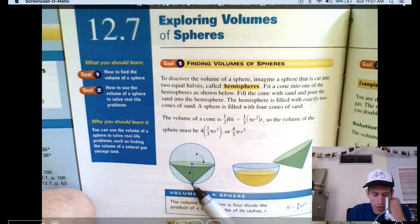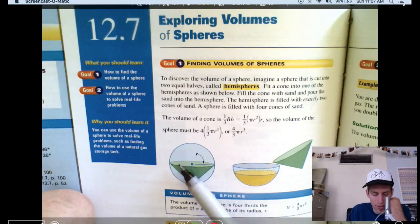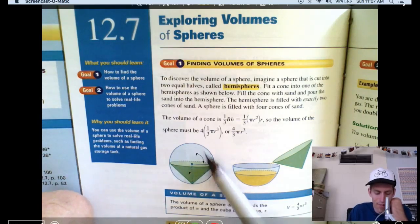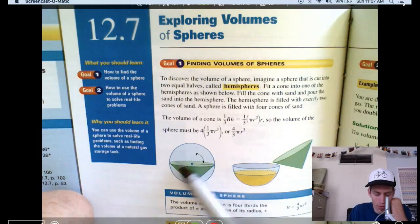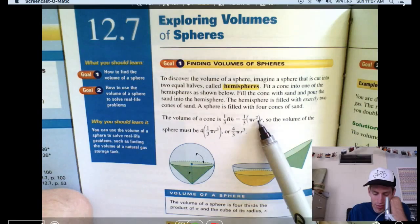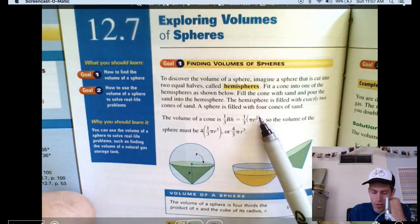Because in a sphere, this cone is such that the height of the cone is the radius of the circle that its base is, and it is the radius of the sphere. So now it's no longer r squared, it's actually r times r times r.